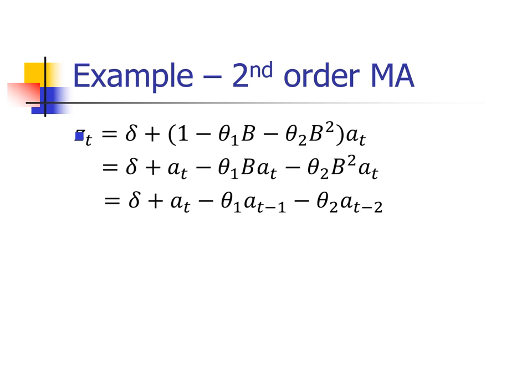Here's a second-order moving average model. Z sub T equals delta plus the second-order polynomial: 1 minus theta-1 times B minus theta-2 times B squared, all times A sub T. Distributing A sub T through gives delta plus A sub T minus theta-1 times B times A sub T minus theta-2 times B squared times A sub T. Applying the backshift operator: B applied to A sub T gives A sub T minus 1, and B squared times A sub T gives A sub T minus 2.